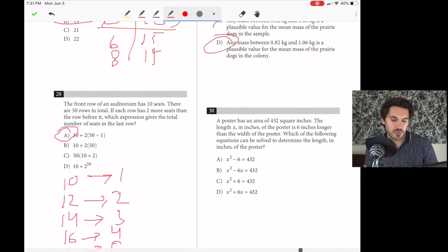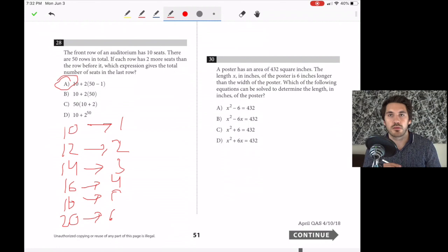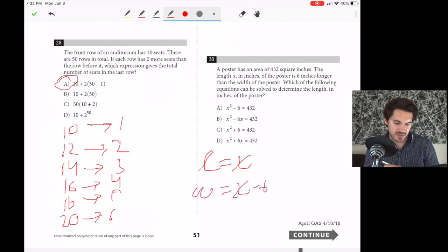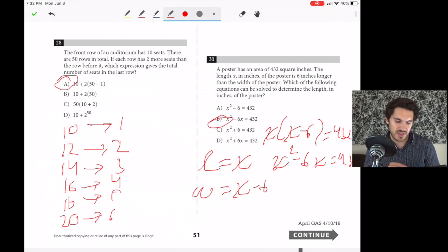Number 30. A poster has an area of 432 square inches. The length x is 6 inches longer than the width. Which equation can be solved to determine the length? Let's say the length is x. They told us that's 6 inches longer than the width, so the width is x minus 6. Area is length times width, so x times (x minus 6) has to give us 432. So x squared minus 6x equals 432, which is answer choice B.